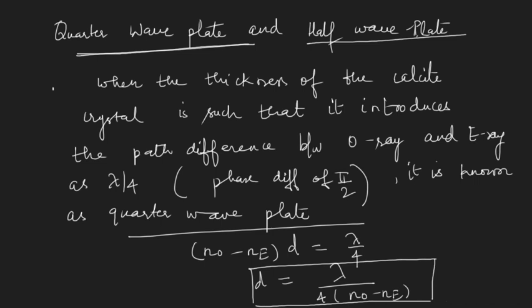When two vibrations are perpendicular to each other with a phase difference of pi by 2 from the quarter wave plate, these two waves interfere to produce either circularly polarized light or elliptically polarized light depending upon the amplitudes. The quarter wave plate is the simplest device to produce these types of polarized light.